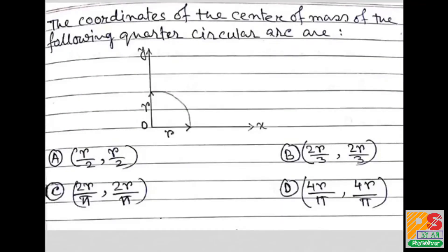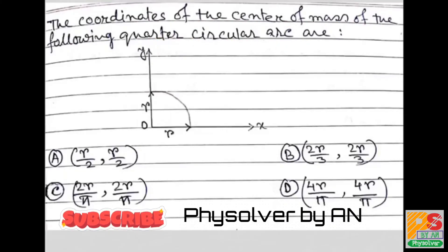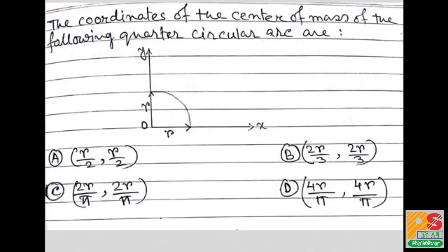Hello students, the question is: find the coordinates of the center of mass of the following quarter circular arc. You can see this is a quarter circular arc and the options are given. Now we need to first know how to find the center of mass of this kind of object.